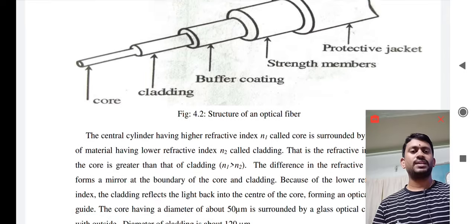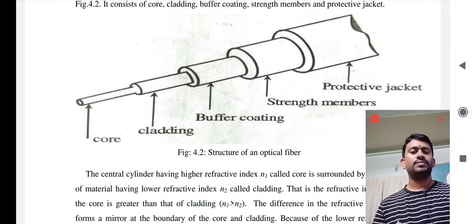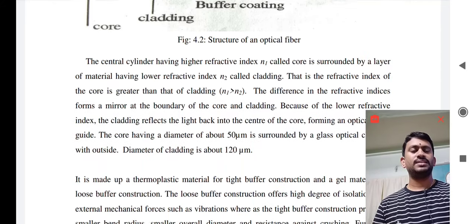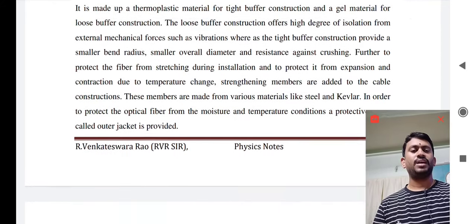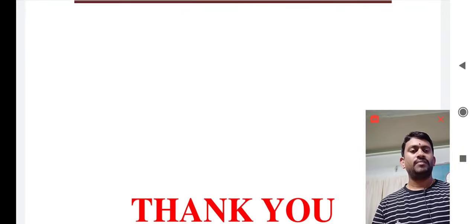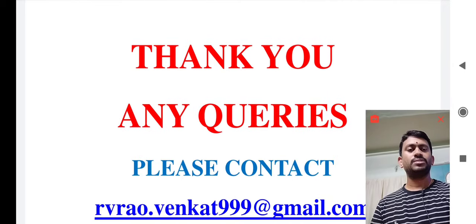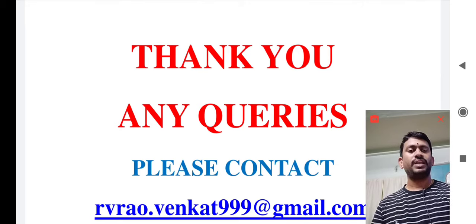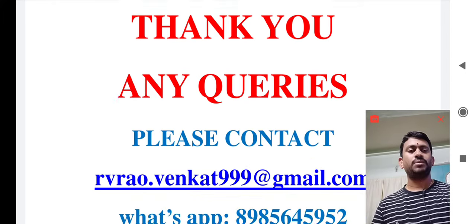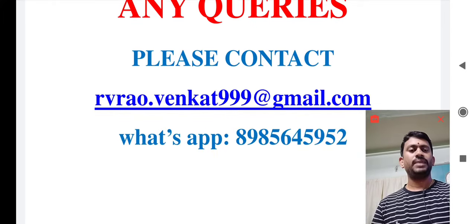This is regarding the structure of an optical fiber. It consists of a core surrounded by cladding, which in turn is surrounded by the buffer coating, again surrounded by the strength members, and a protective jacket. For a better understanding of the structure, I am trying to explain the same structure with an animated video — please watch that video also. If you have any doubts or queries, please feel free to contact me through my email or WhatsApp.